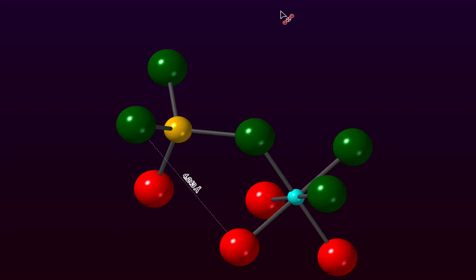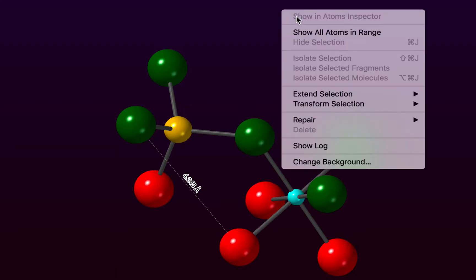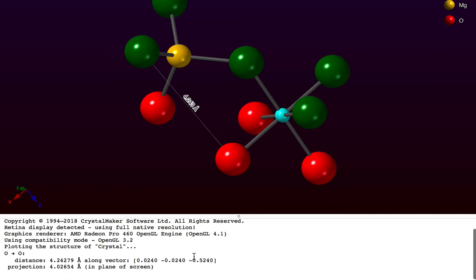You can get more information about the measured distance and its direction by showing the window log. We can right-click, show log, and the bond distance and its vector, as well as its projection in the plane of the screen, are displayed in the window log.